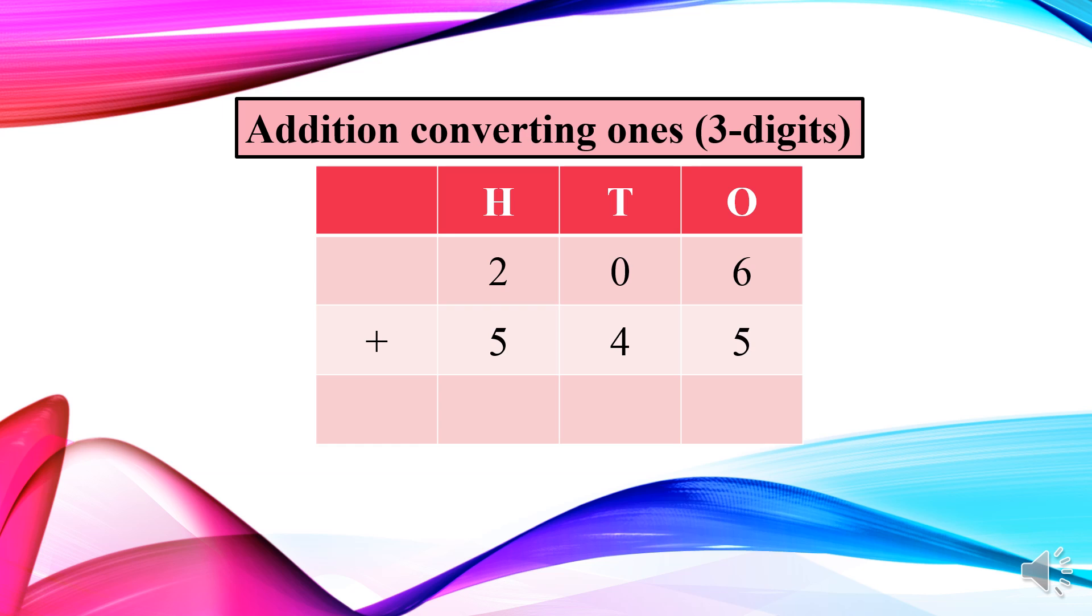So at once place we have six ones and five ones. Then we have to add it because we have the sign of addition here. What we will get? We will get eleven, right? So eleven is a two digit number and we cannot write it at once place.